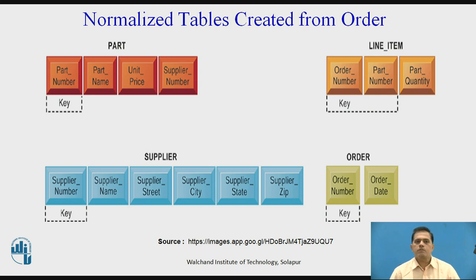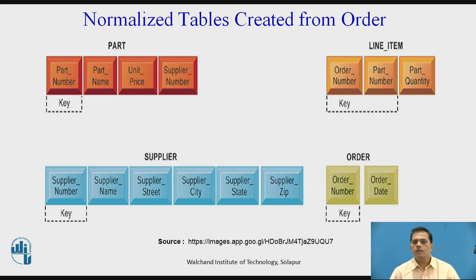When one table has a foreign key that points to another table, you may not add a record to the table with the foreign key unless there is a corresponding record in the linked table. For example, foreign key supplier number links the part table to the supplier table. Referential integrity means a new part cannot be added to the part table without a valid supplier number existing in the supplier table. It also means that if a supplier is deleted, any corresponding parts must be deleted as well.